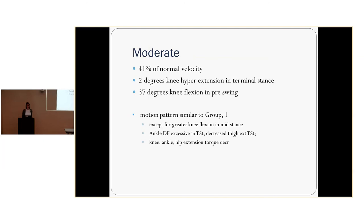The moderate group is at 41% of normal velocity — significantly slower. They have two degrees of knee hyperextension in terminal stance and 37 degrees knee flexion in pre-swing, so not flexed enough, causing trouble clearing the limb. The motion pattern is similar to group one, with greater knee flexion in mid-stance, excessive ankle dorsiflexion in terminal stance, and decreased thigh extension in terminal stance — not getting a good propulsive force. Overall, EMG recordings showed decreased hip, knee, and ankle extensor torque, meaning they're not recruiting those muscles as they should be in the gait pattern.